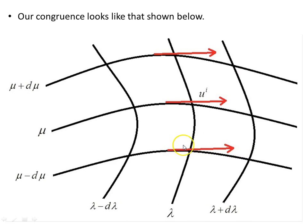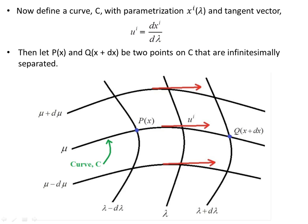These red arrows represent the tangent vector u i. We're going to define a curve c with parameterization x i of lambda and tangent vector u i equals dx i d lambda. Here's our curve c that we're interested in — one of a number of the congruence curves. We're just picking this particular curve.